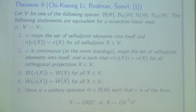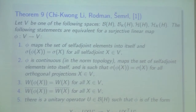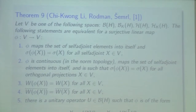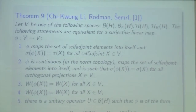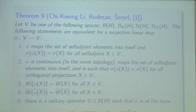Now I would like to present the main theorem. I would like to emphasize that this proof is based on the original paper. I would like to present some ideas and some nice aspects of the previous theorem, referring back to the original paper for full details. Given one of the following spaces, for a surjective linear map phi, the following conditions are equivalent.